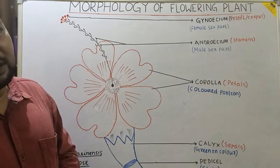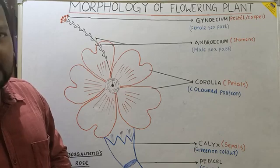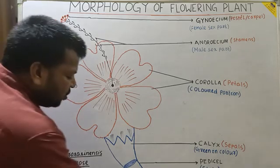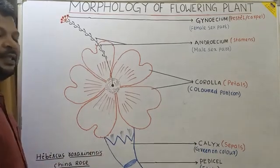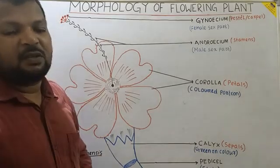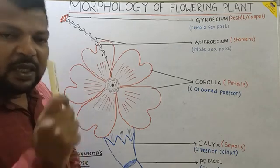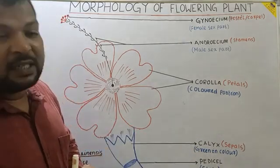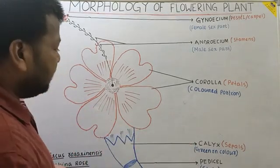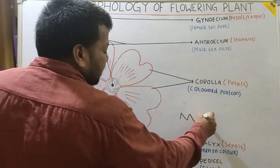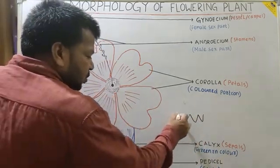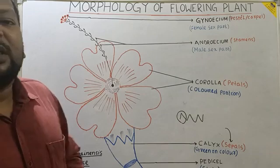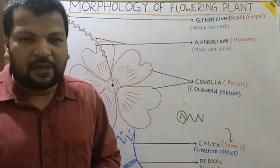A flower can be pedicellate — that is, having a stalk — or sessile, meaning without a stalk. At the end of the stalk, you observe a greenish color structure. The entire greenish color structure is called Calyx. The individual unit of Calyx is called Sepal.